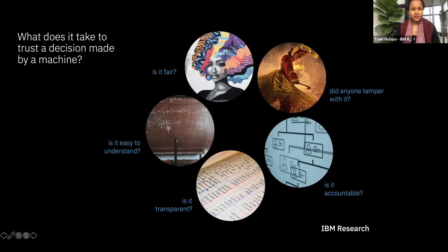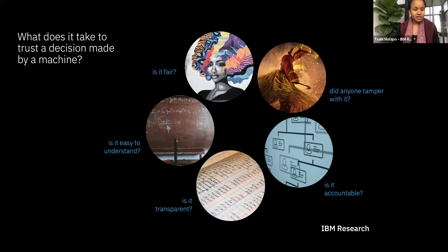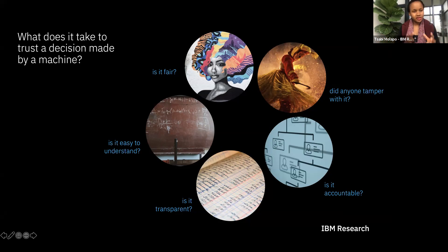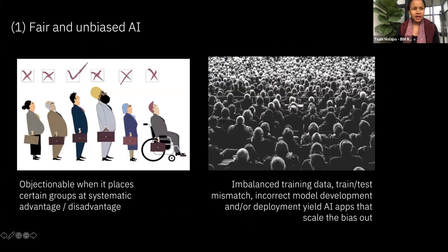Reinforcing what I just said: when we say we have built an AI system that is trustworthy, the key questions are — is it fair? Is it easy to understand? Is it transparent? Is it accountable? And importantly, on the question of robustness: did anyone tamper with it? Is it safe for use? Is it attack-proof?